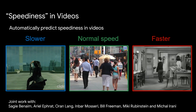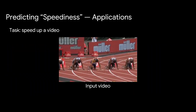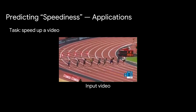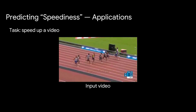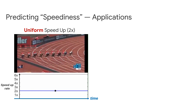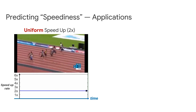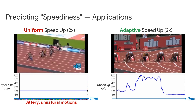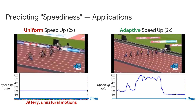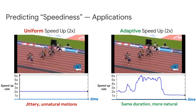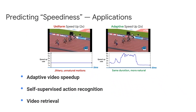One application for predicting speediness is speeding up videos. Take an input video — how can we watch it faster yet without losing any information? A common way is to drop frames uniformly, which is what you get on YouTube at 2x, resulting in jittery and unnatural motions. Our method can adaptively speed up the video based on its content, producing a result with the same duration as the uniformly sped-up version but much more naturally looking. By learning to predict speediness, a neural network can also learn powerful space-time features useful for action recognition and video retrieval.